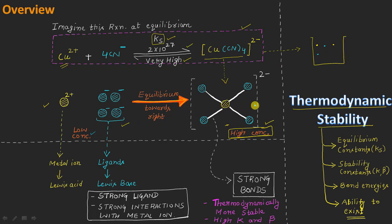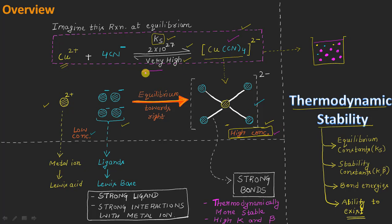On the other hand, this complex will be present in very large concentration, represented by large purple dots. It is just the ability of this complex ion to exist at equilibrium in high concentration that is referred to as the thermodynamic stability of this complex. We say that the complex is highly thermodynamically stable because it is present in high concentration, and the reaction is moving only in this forward direction, resulting in the formation of a thermodynamically stable complex.